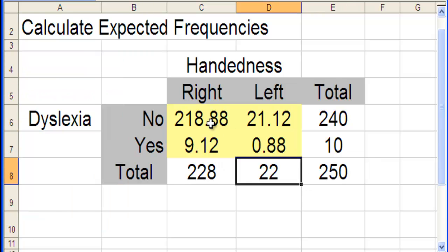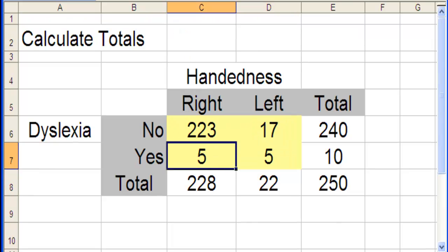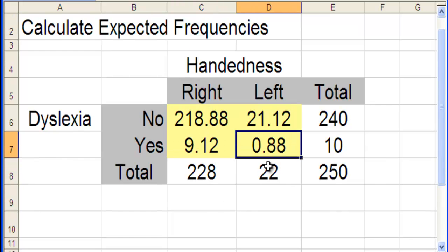Now I'll note that the difference here between the observed of 5 and the expected of .88 seems pretty different. There seems to be a pretty big difference there. And the question in the 2x2 contingency table analysis is, are these deviations between observed and expected sufficiently large as to have confidence that it's not simply due to chance that we're seeing some differences? That's the crux of the 2x2 table analysis.